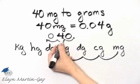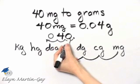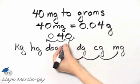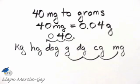Here's my decimal point: zero, four — and I just left that last zero off. So 40 milligrams is equal to four hundredths grams.